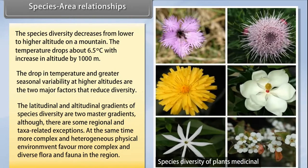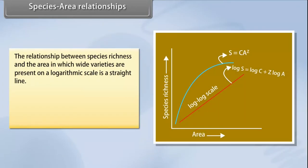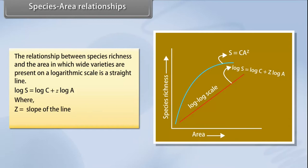The latitudinal and altitudinal gradients of species diversity are two master gradients, although there are some regional and taxa-related exceptions. More complex and heterogeneous physical environments favor more complex and diverse flora and fauna. The relationship between species richness and area on a logarithmic scale is a straight line: log S = log C + z log A, where z is the slope of the line and C is the y-intercept.